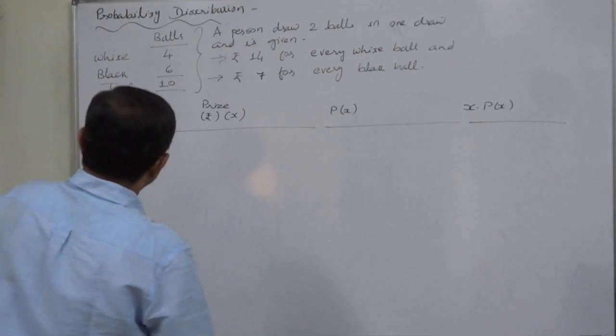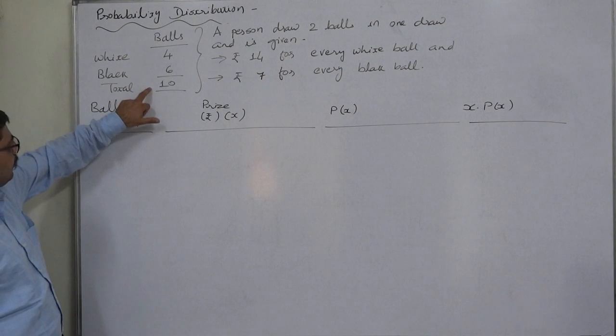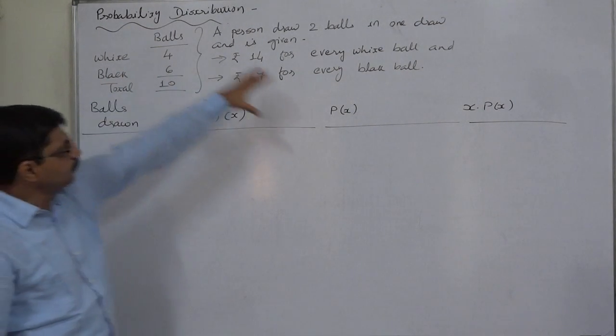Now first of all, let us think what can happen. These are 10 balls, 4 white, 6 black, 2 balls are drawn.